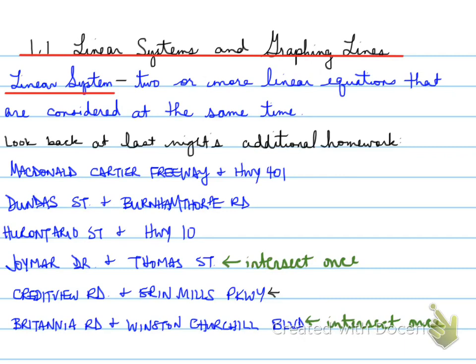Now let's look at Credit View and Aramels Parkway. How do they relate to each other? Well, Credit View and Aramels Parkway each of them both run north and south. So what happens there is that those streets will never intersect. They do not intersect. Dundas Street and Bernthorpe Road are also two streets that do not intersect.